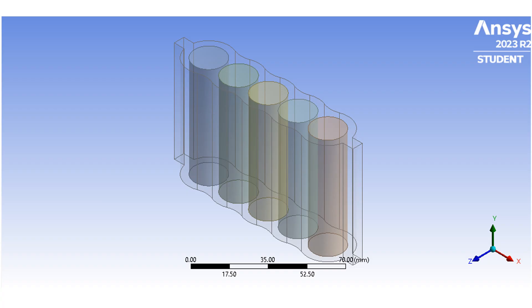This is the geometry which is prepared with the help of Design Modeler. There are five cells which have been separated from each other, and surrounding them there is a serpentine flow channel through which the fluid is flowing. The fluid is useful for cooling the lithium-ion cells, reducing the temperature further.